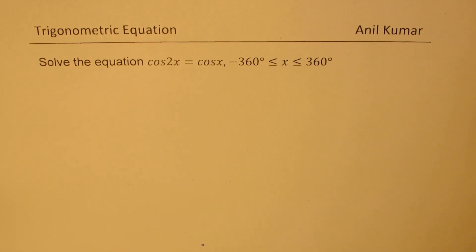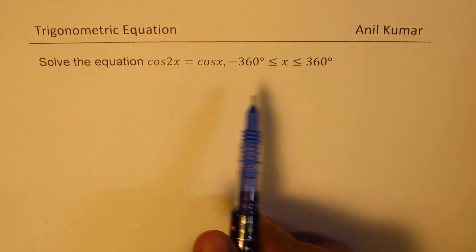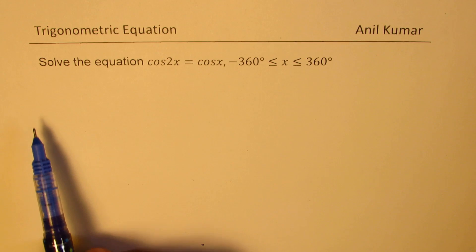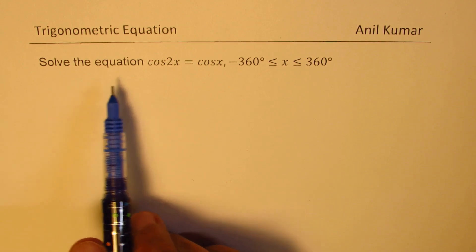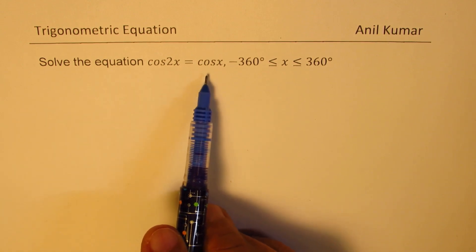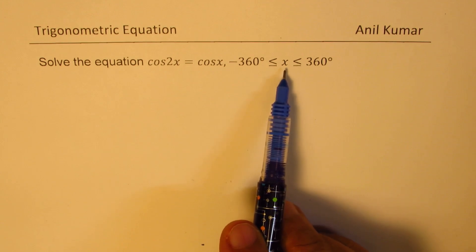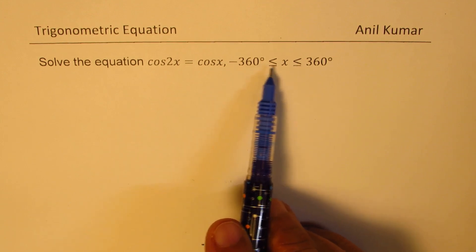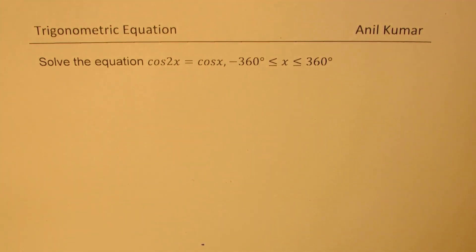I am Anil Kumar. Welcome to my series on trigonometry. We have an interesting trigonometric equation to solve within a given domain. The question here is, solve the equation cos 2x equals cos x, where x is between minus 360 degrees to 360 degrees.